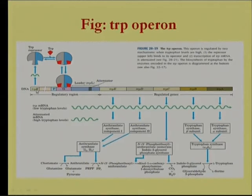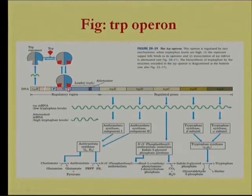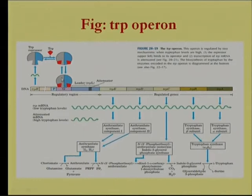The leader sequence monitors the trp levels inside the cell. The trpR gene, which encodes for the trp repressor, is located near the trp operon and transcribed through its own promoter. When trpR is expressed, the trpR mRNA is translated into protein. The dimer form of the trp repressor bound by tryptophan is active and occupies the operator site, exerting negative control. When tryptophan is present, the trp repressor exerts negative control, and attenuational control ensures transcription does not continue.